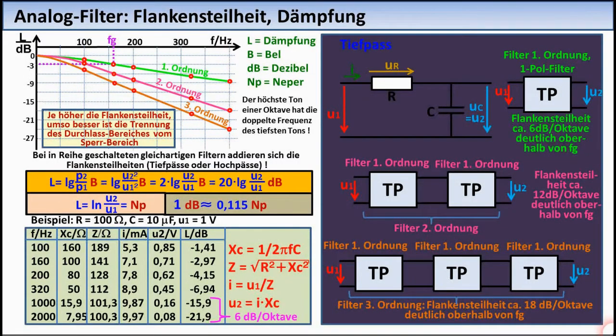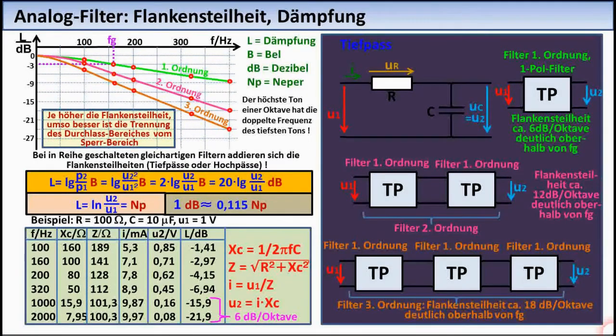Using the example of a single-stage RC low-pass filter, a so-called first-order low-pass filter, the concepts of attenuation and slope steepness will be explained.